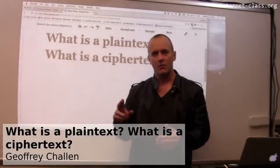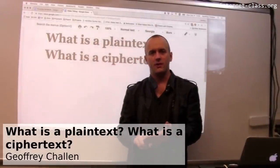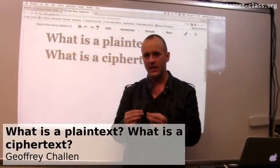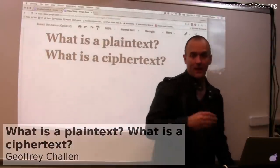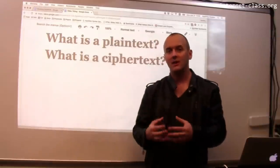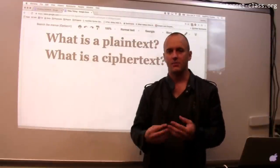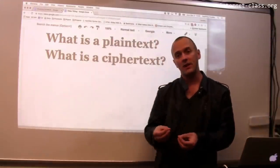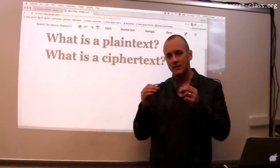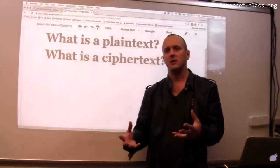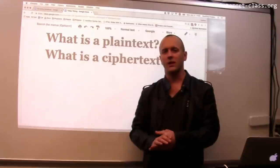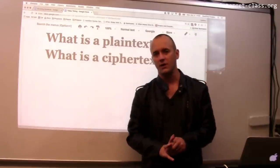When we talk about encryption, we frequently talk about two things: a message plaintext and a message ciphertext. The plaintext of the message is the message itself. It's typically a secret that I don't want to reveal to other people on the internet. The ciphertext is the message after it's been encrypted using whatever sort of encryption protocol that we're going to use.